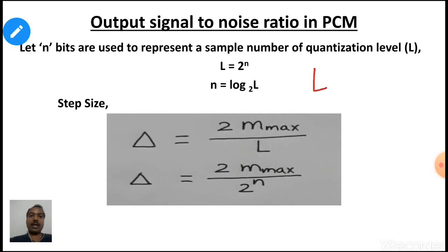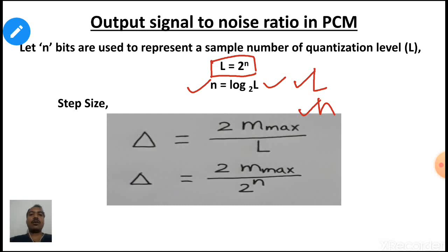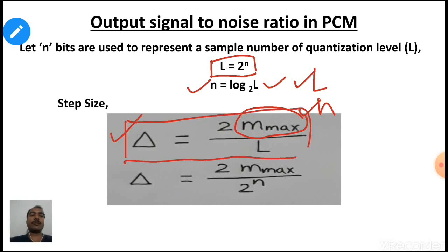If there are L quantization levels and N number of bits in each quantization level, then the relationship between quantization levels and bits per sample is L = 2^N. You can also write N = log base 2 of L. Now if you know the maximum value of the input signal, you can find delta, that is the step size. This expression has already been discussed in the previous lecture.